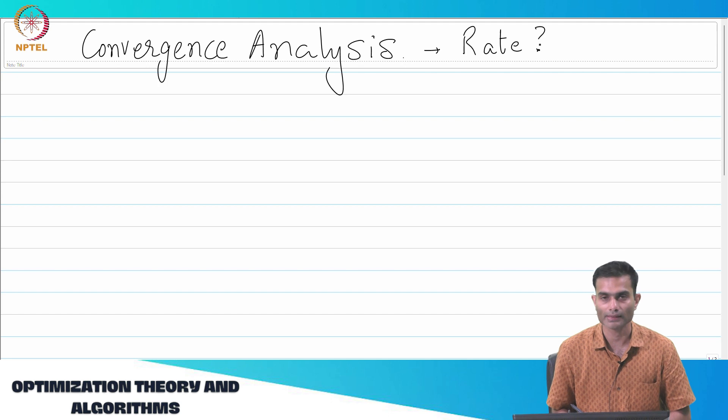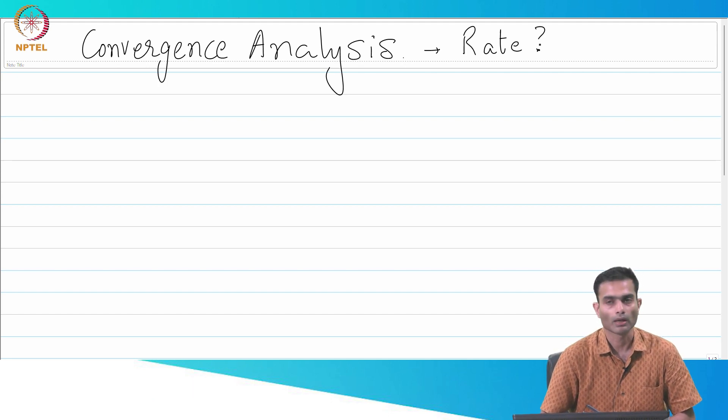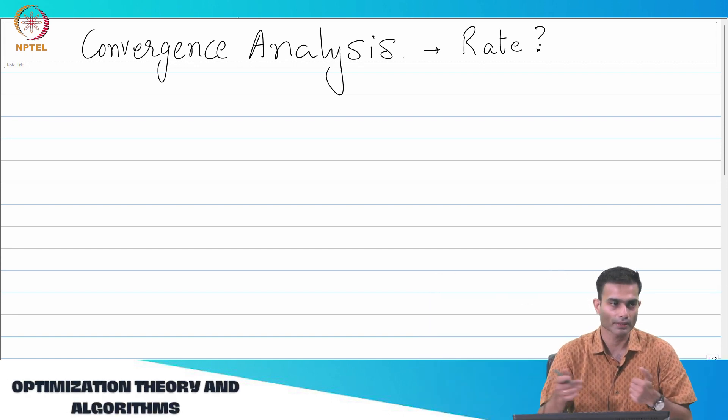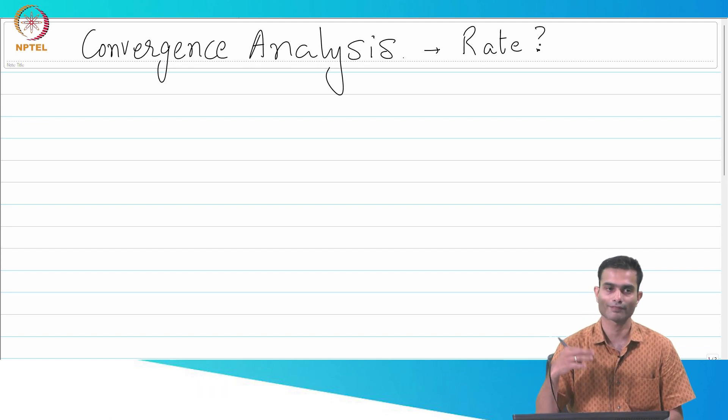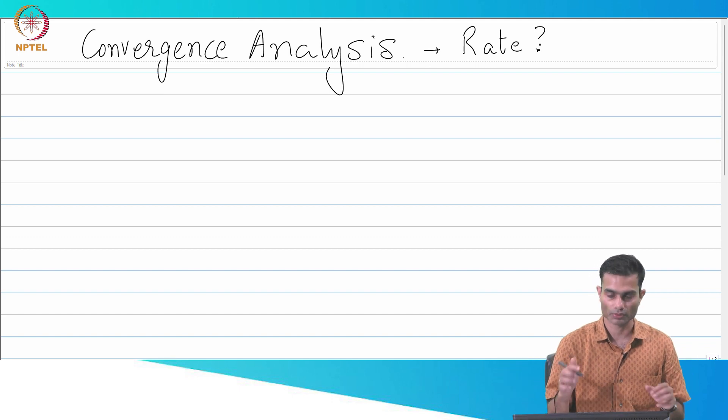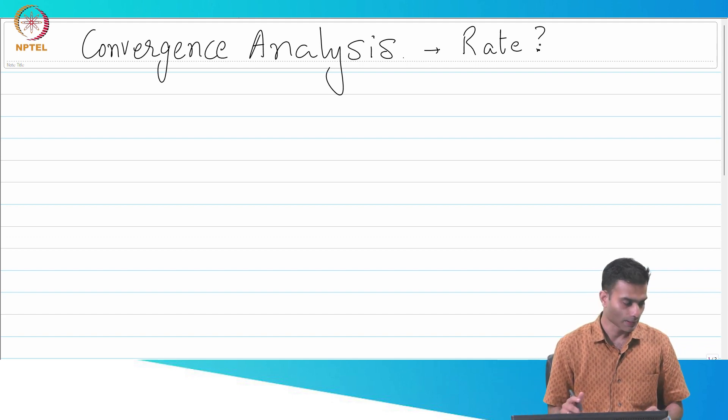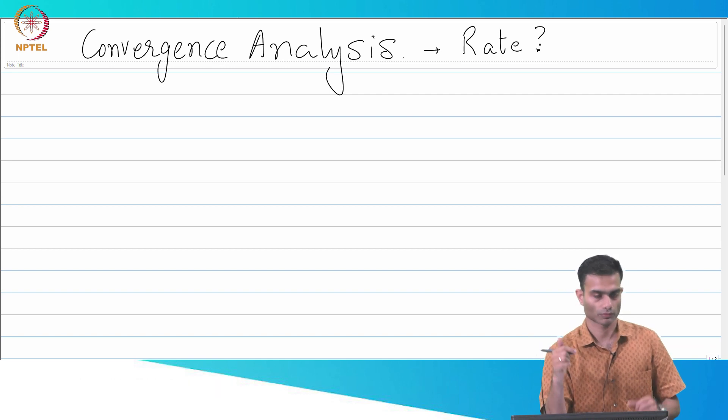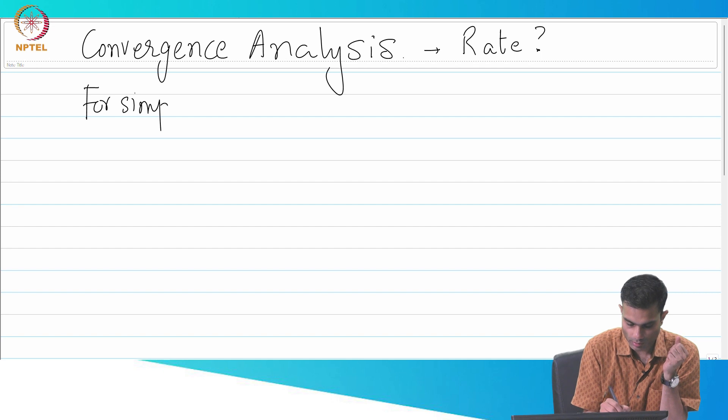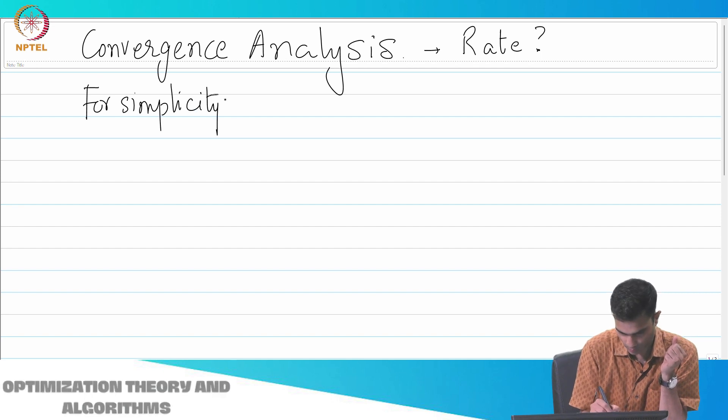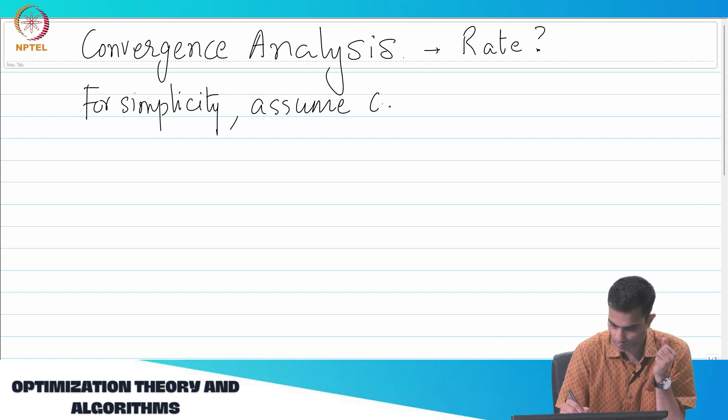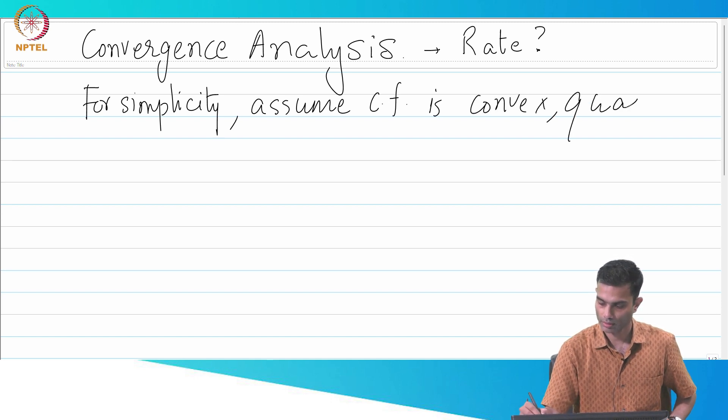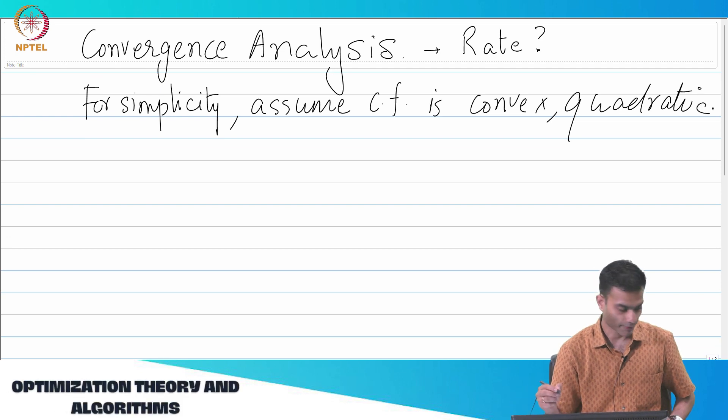Now, as it turns out, this rate analysis, it's a little bit more tricky to do. So I'll make some simplifying assumptions, and with that simplifying assumption we'll arrive at a certain rate, and then I'll point you to some other resources where people have worked it out in the more general case. It's much longer, the proof. So we'll prove it for a simple case, and that simple case is assuming the objective function to be convex and quadratic.